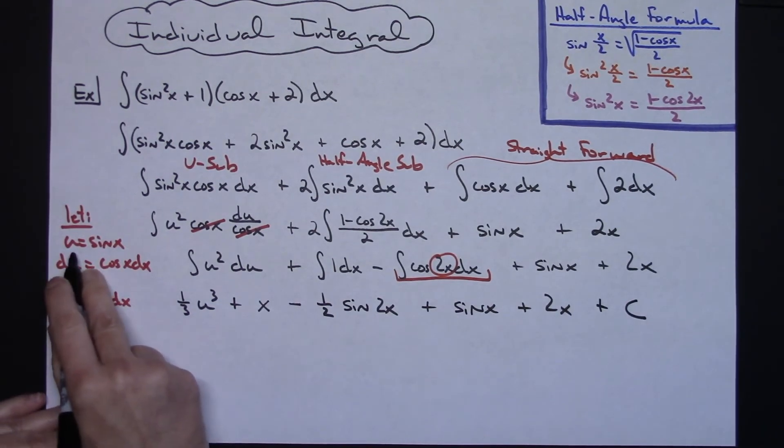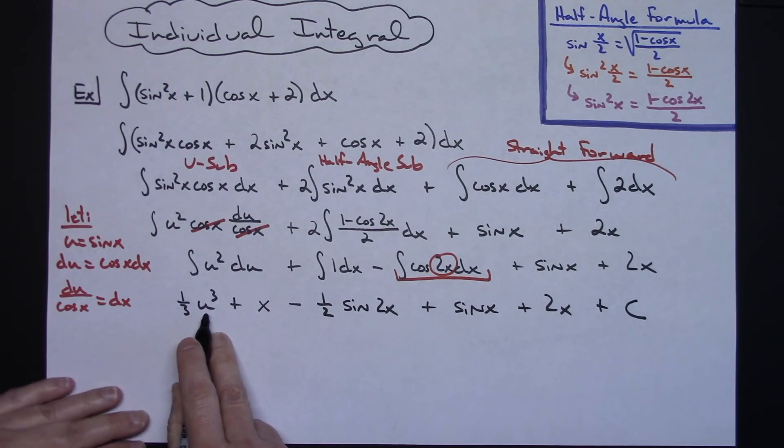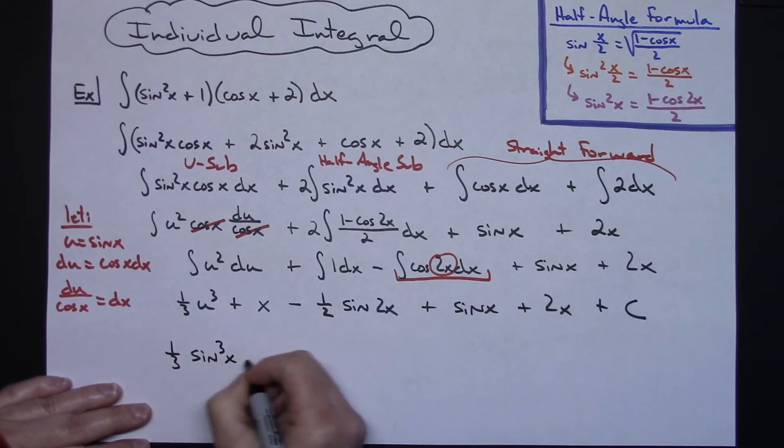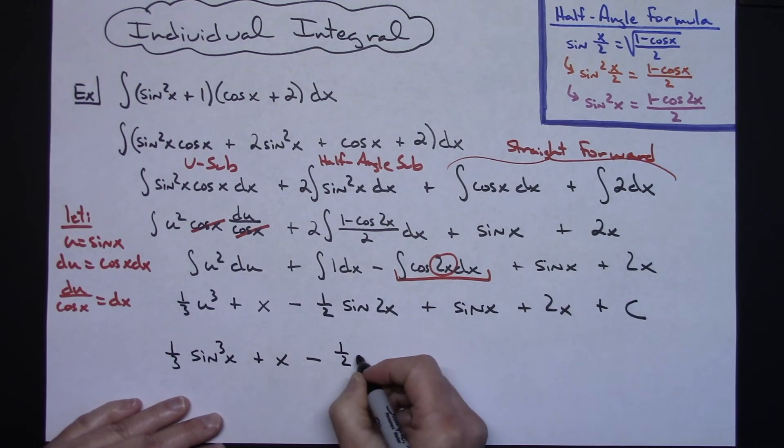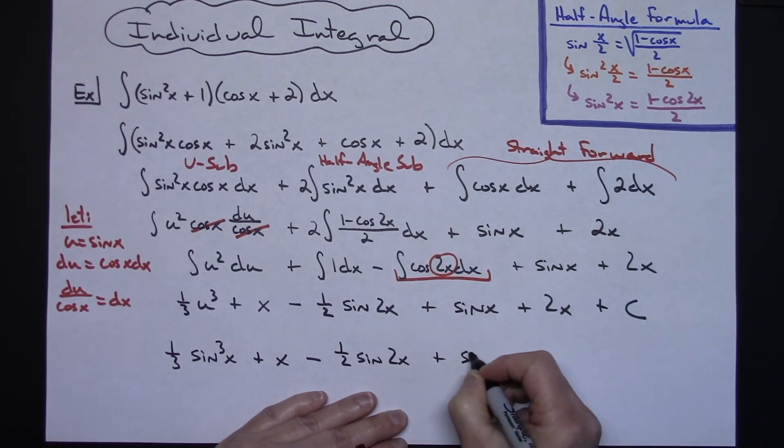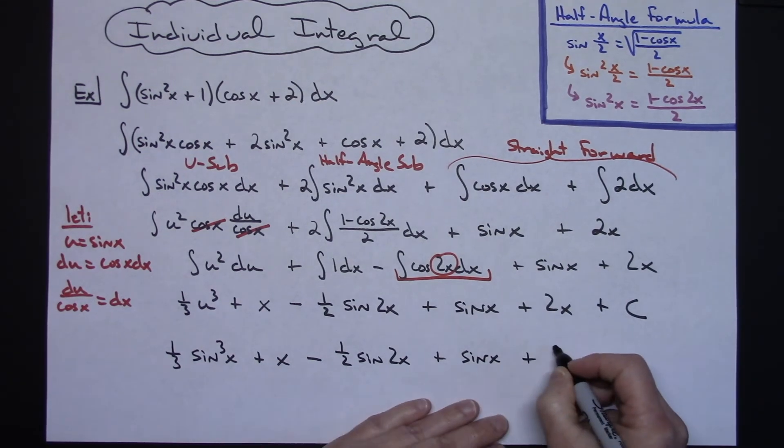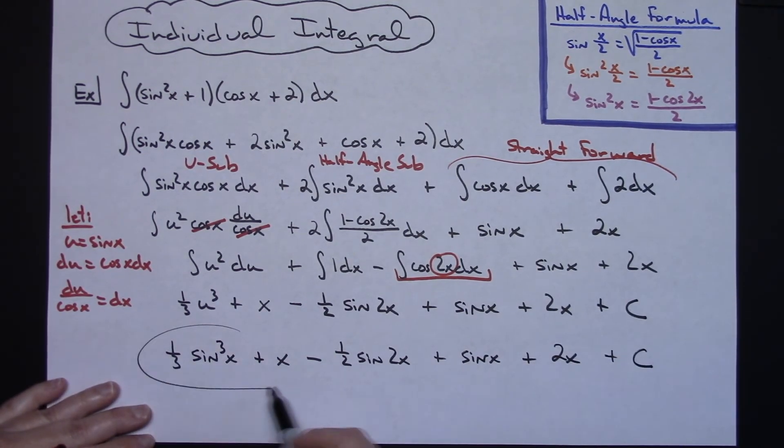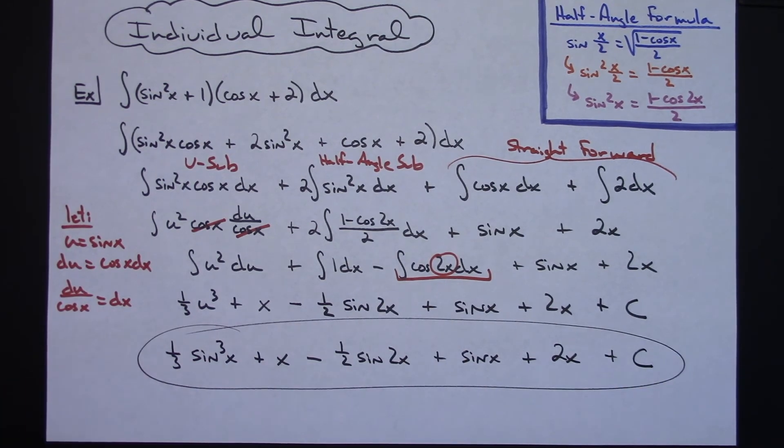Now substituting this u back in here I'll have a sine x there so we'll have 1 third sine to the third x plus x minus 1 half sine 2x plus sine x plus 2x plus c.